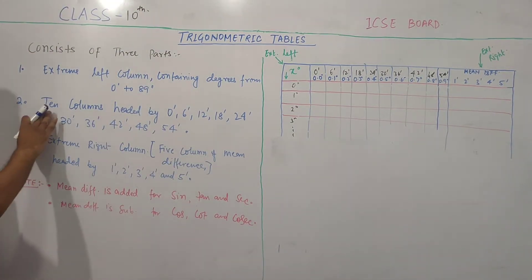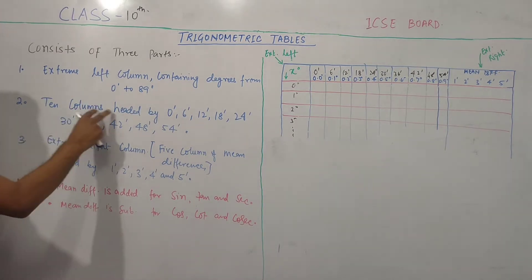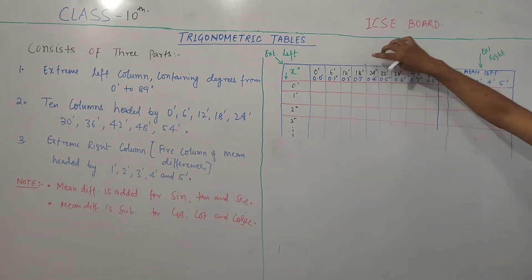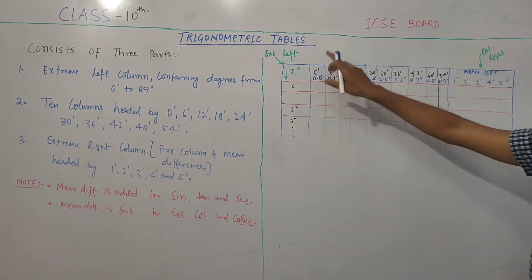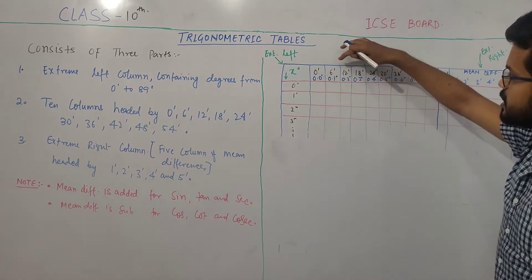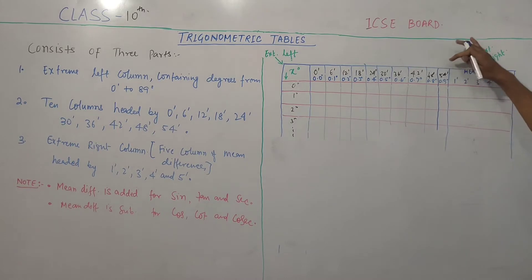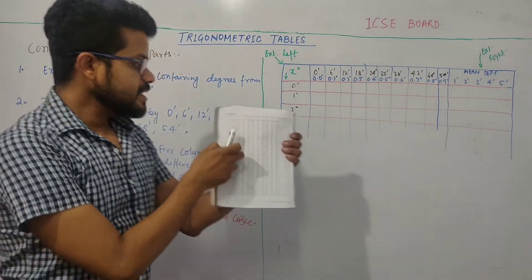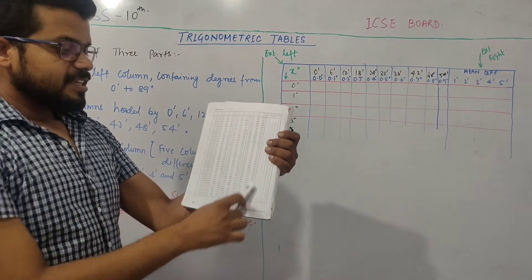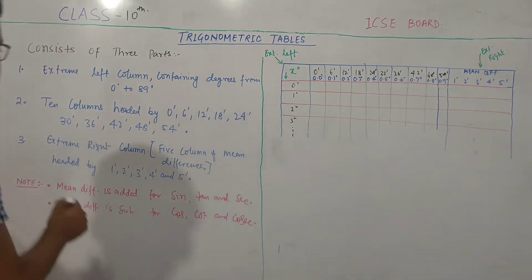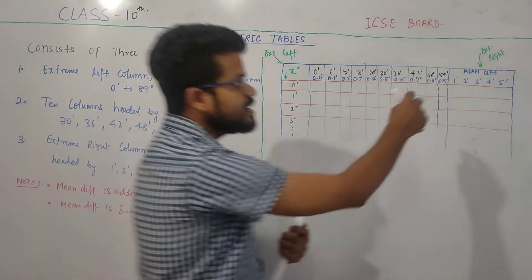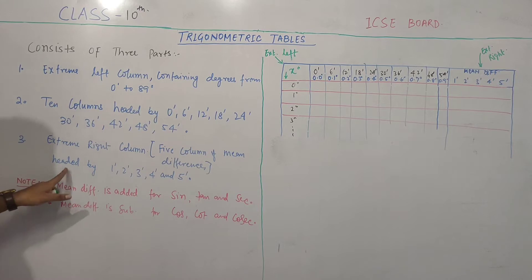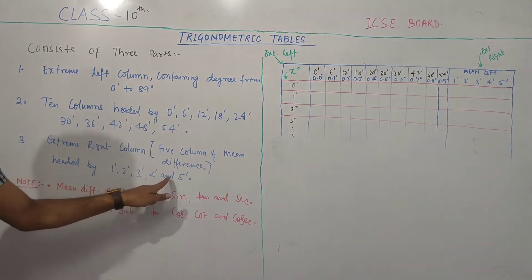The second part has 10 columns headed by 0 minute, 6 minute, 12 minute, 18 minute — and so on up to 10 columns. Then, the third part is the extreme right column, headed by 1 minute, 2 minute, 3 minute, 4 minute, and 5 minute. This extreme right column is basically the mean difference column.